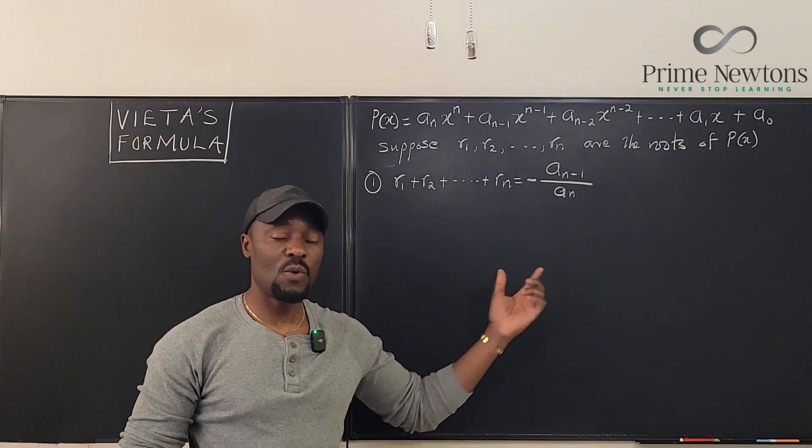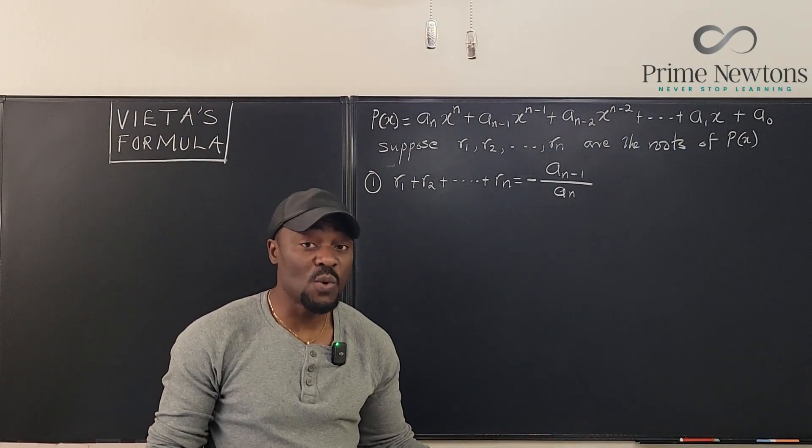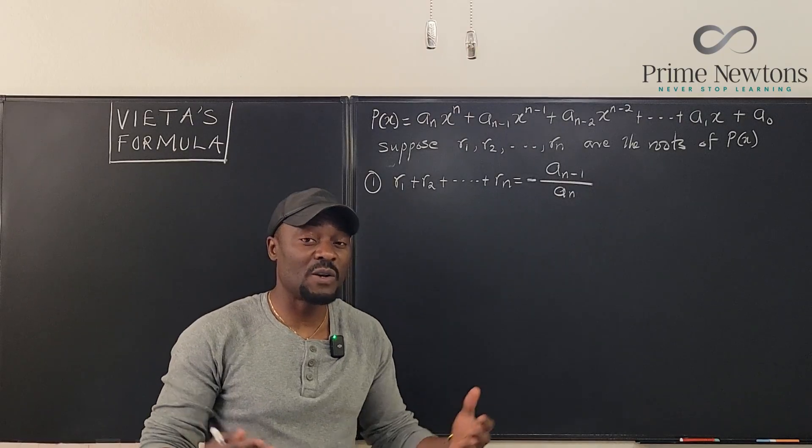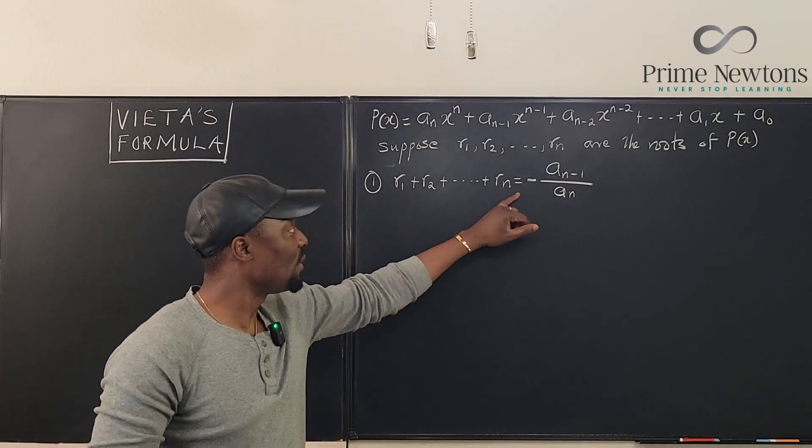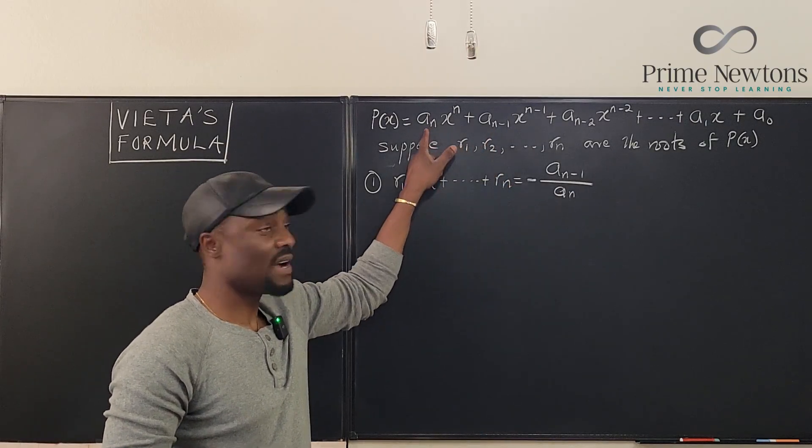This looks too easy. Well, again, we're not telling you what the roots are. We're just talking about when you add up all the roots. So the sum of all the roots is this divided by this.